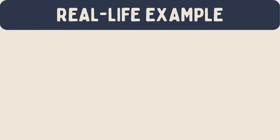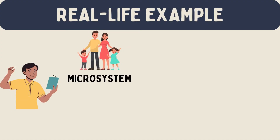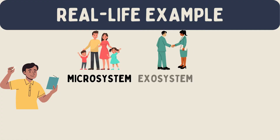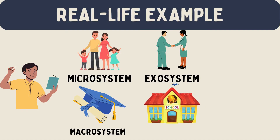Imagine a teenager named Alex. Alex lives with his family — that's the microsystem. His parents have demanding jobs, which is the exosystem. They value education, which reflects the macrosystem. So they are very involved in his school, forming the mesosystem.